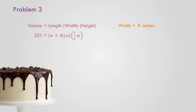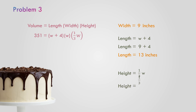So the width is 9 inches. Let us solve for the length and the height. The length is w plus 4, so 9 plus 4 — the answer is equal to 13 inches. The height is one-third w: one-third times 9 is 9 divided by 3, so the height is equal to 3 inches. So the length is 13 inches, the width is 9 inches, and the height is 3 inches.